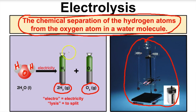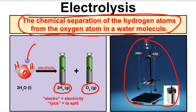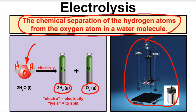So we talked about six physical processes where we can separate a mixture, and then we talked about one chemical process where we can separate a pure substance — in this case water, which is a compound. If you like what you see, go ahead and click the button in the bottom right-hand corner, and feel free to leave any comments in the comment section below. I hope you guys found this helpful.